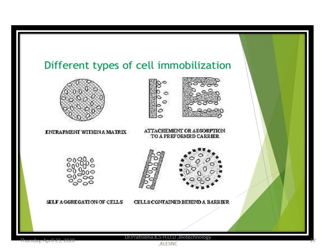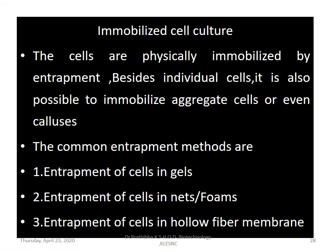The different types of cell immobilization are: entrapment within the matrix, attachment or absorption to a preformed carrier, self-aggregation of cells, and cells contained behind a barrier. The cells are physically immobilized by entrapment. Besides individual cells like protoplasts isolated from the plant system using enzymatic or chemical methods, it is also possible to immobilize aggregate cells or even calluses. Common entrapment methods include entrapment in gels, nets, foams, and entrapment in hollow fiber membranes.